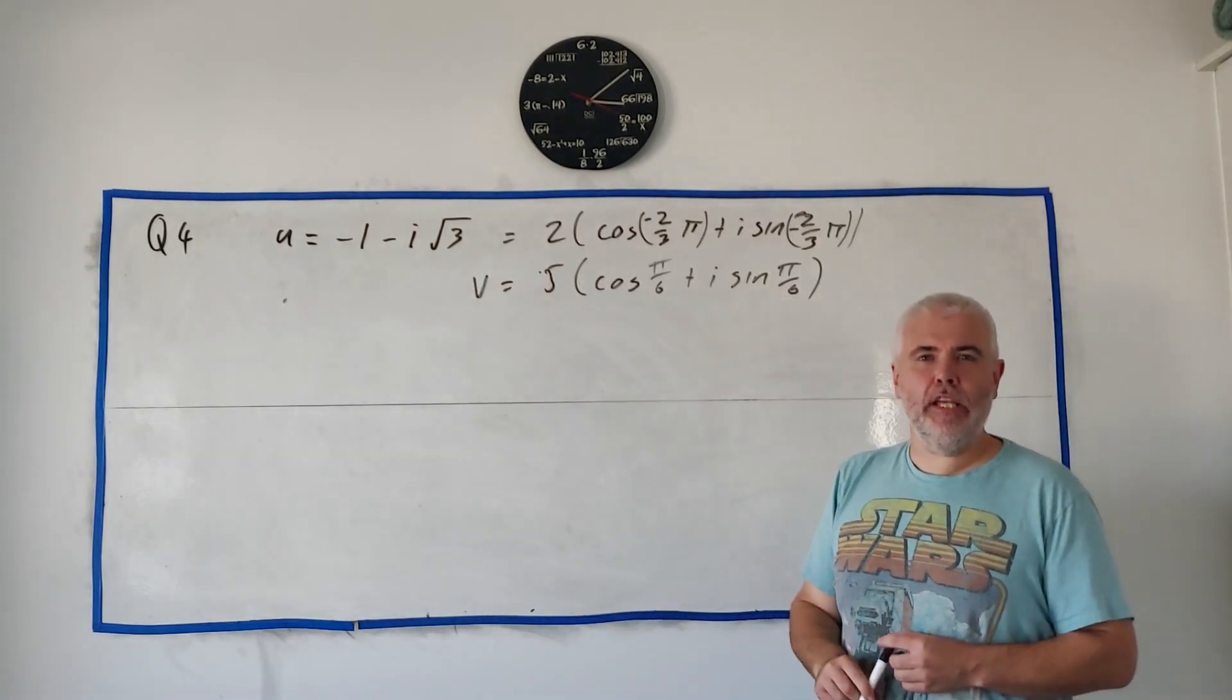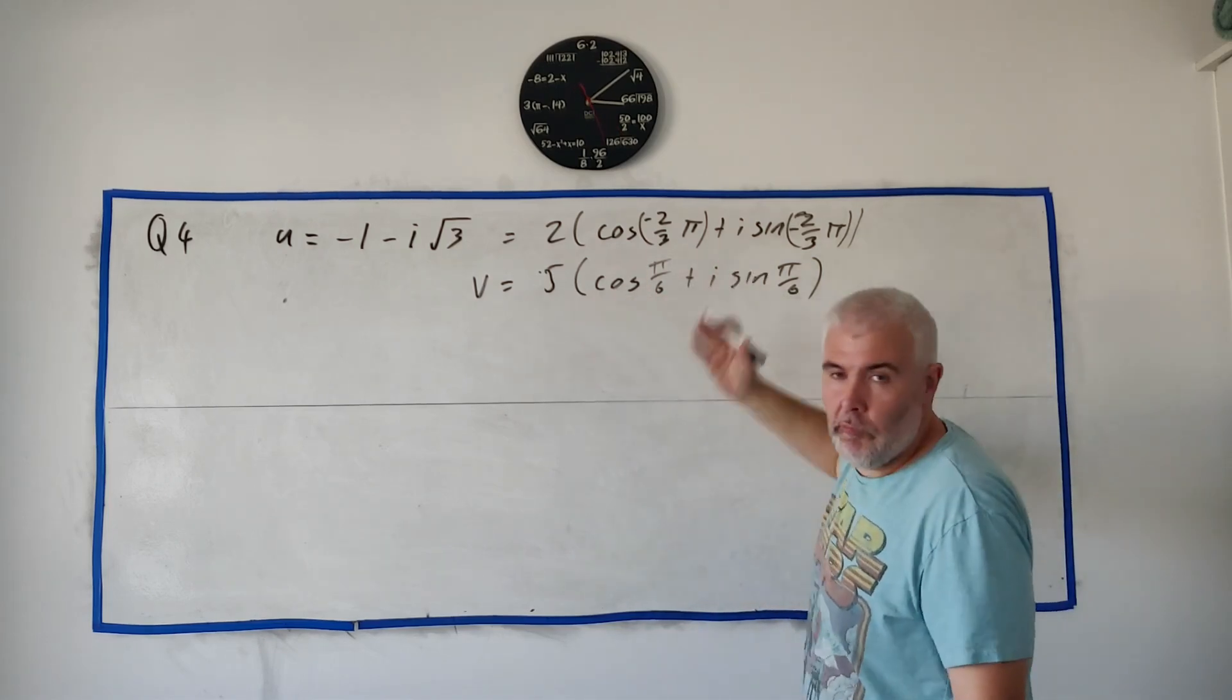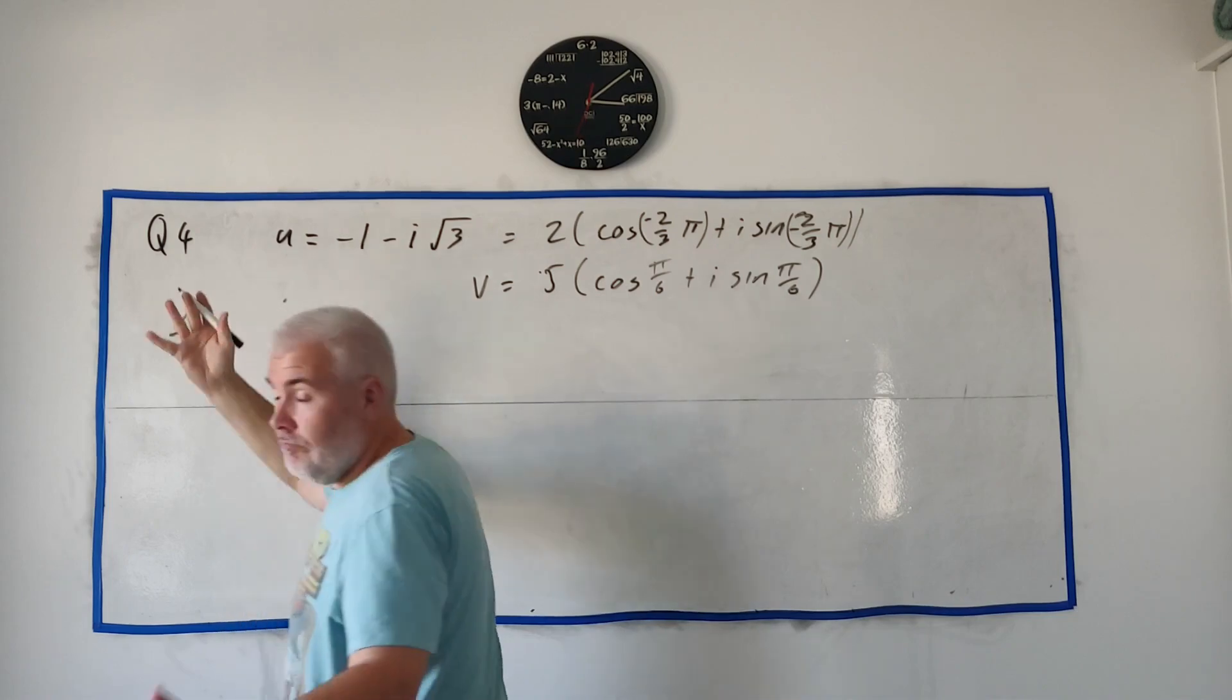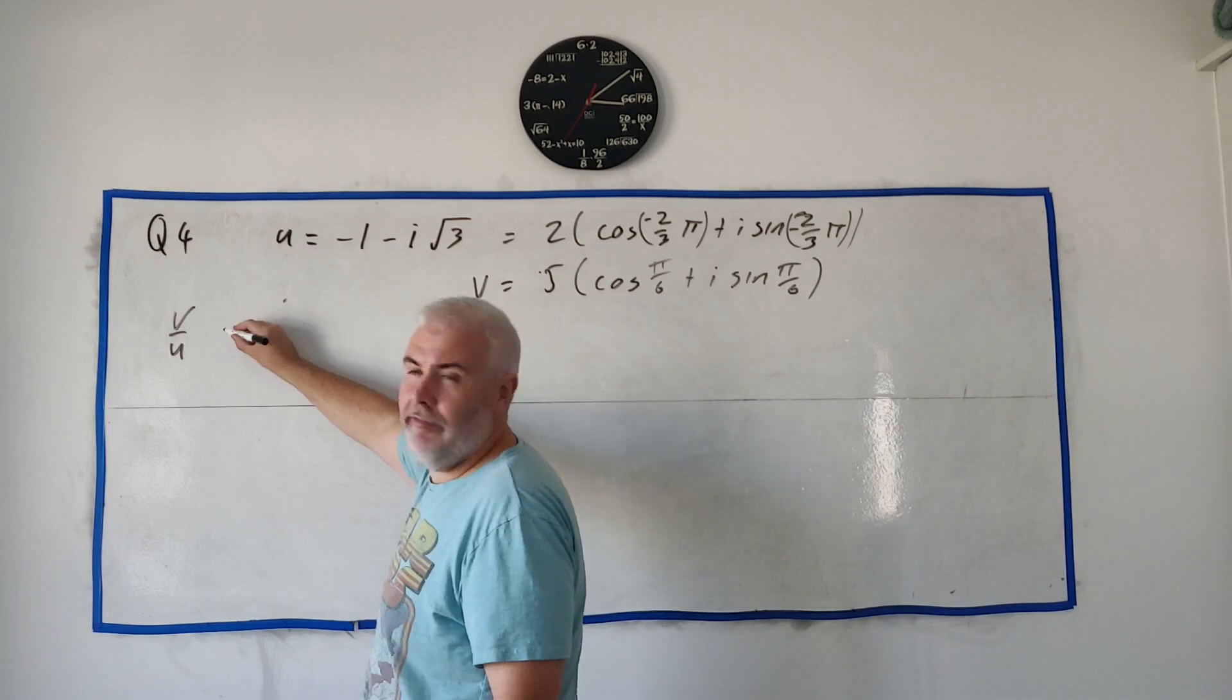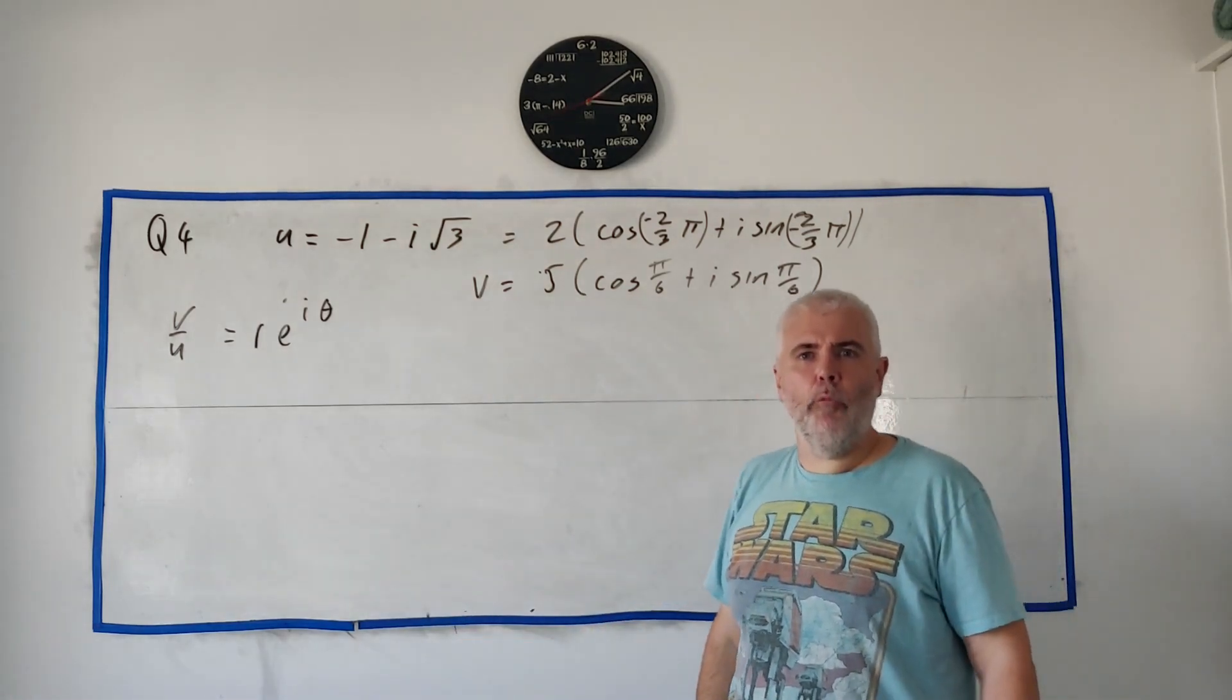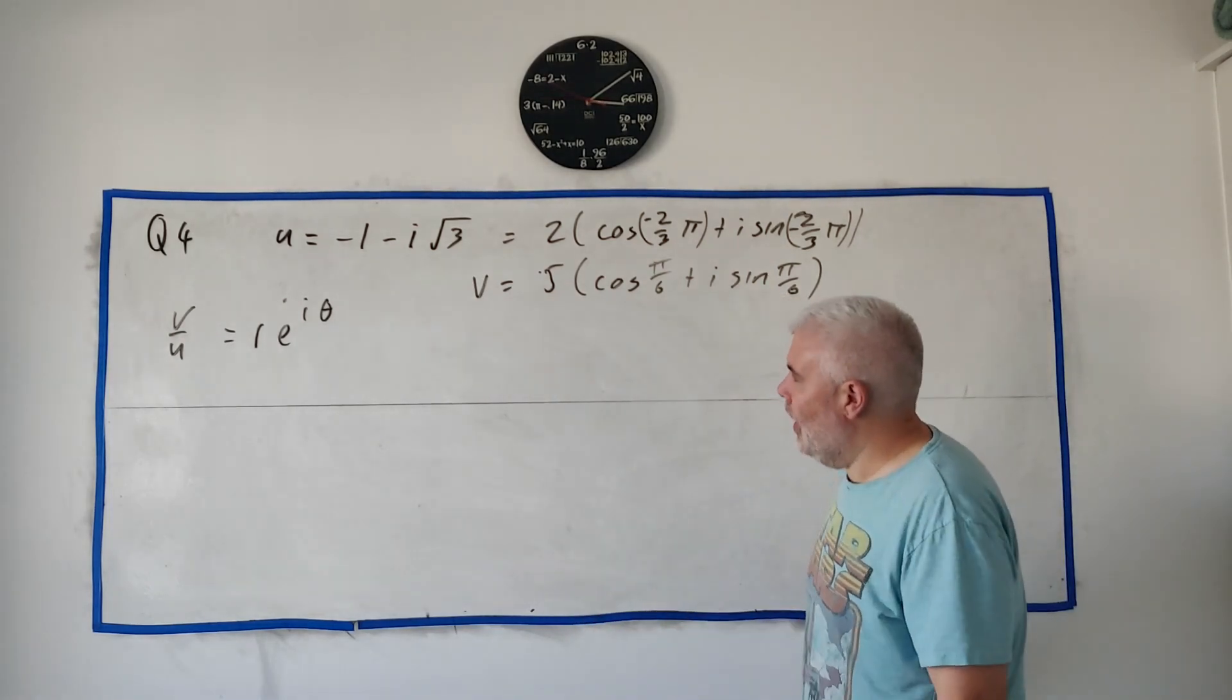In part B they give us another complex number. This time they give it to us in this polar form. I won't read it out there. And they simply ask us, so this second one's V, the first one was U. They ask us to get V divided by U. That's it. But they want us to put our answer in the form of r e to the power of i some angle theta, where r is bigger than zero and theta is between plus and minus pi.